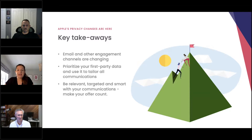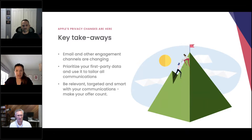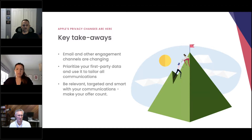So our key takeaways from this presentation: firstly, email and other engagement channels are changing. These privacy updates are the changes that we've needed to continue to evolve and refine our communication strategies to subscribers. Make sure you prioritize your first-party data and use that to tailor all of your communications. Be relevant, targeted, and smart with those communications, because engagement is really hard to come by now — there's a lot of noise out there. So make your offer count.